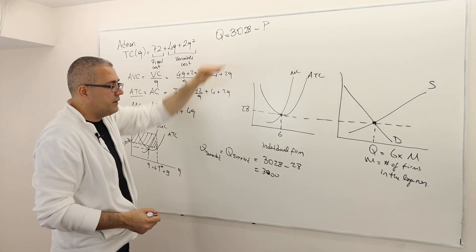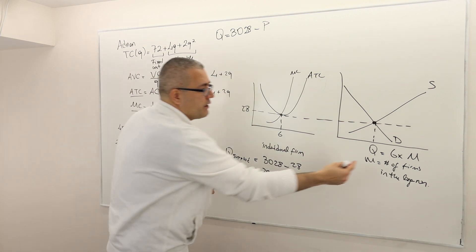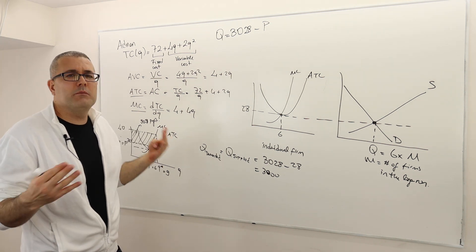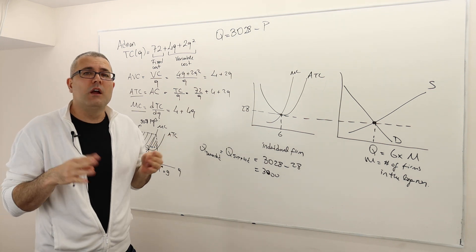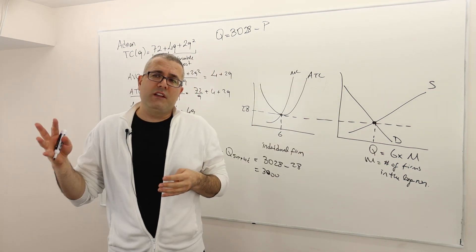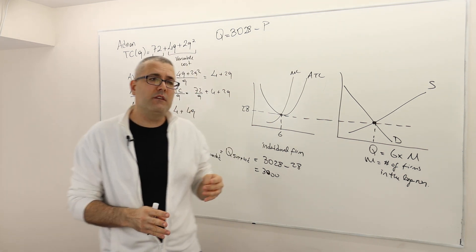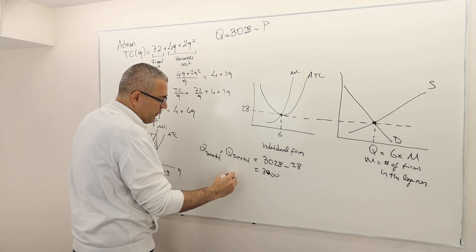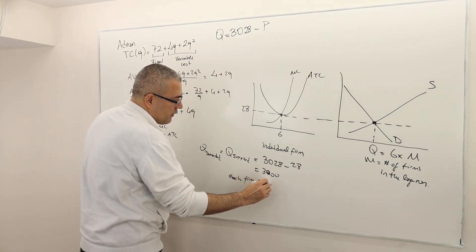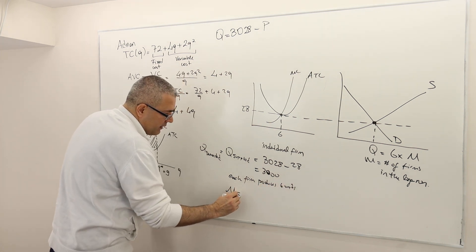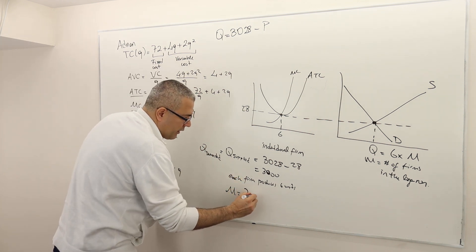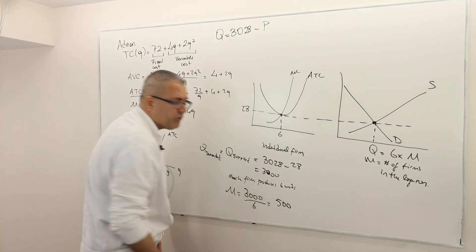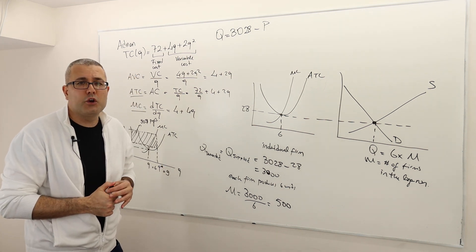Each firm produces exactly six units because that is the profit-maximizing quantity — producing more or less than six would yield negative profit, so six is the break-even quantity. Therefore, the number of firms M = 3000 ÷ 6 = 500. In the long run, there will be 500 firms in this market.